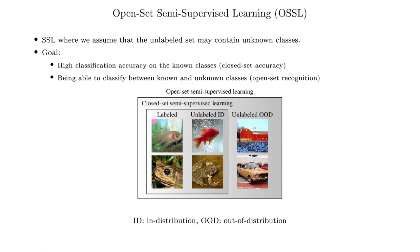The labeled set contains images of fish and frog. The unlabeled set contains images of fish and frog but also of the unknown classes building and car. Here we use the abbreviations ID for in-distribution, denoting the known classes present in the labeled training set, and OOD for out-of-distribution for the unknown classes that appear in the unlabeled set. The goal in Open-Set Semi-supervised Learning is typically to train a model that reaches high classification accuracy on the in-distribution classes.